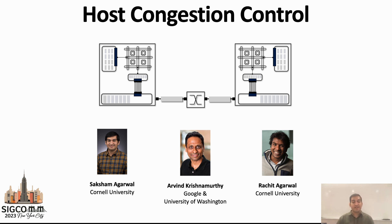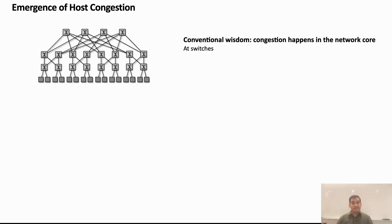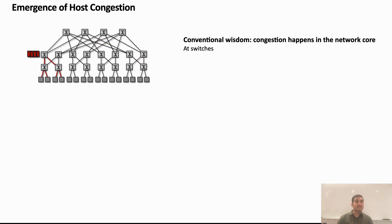Let's jump right in. The conventional wisdom in our community is that congestion happens primarily in the network core, that is, at switches. For instance, due to oversubscribed topologies, incast traffic patterns, poor load balancing, et cetera.